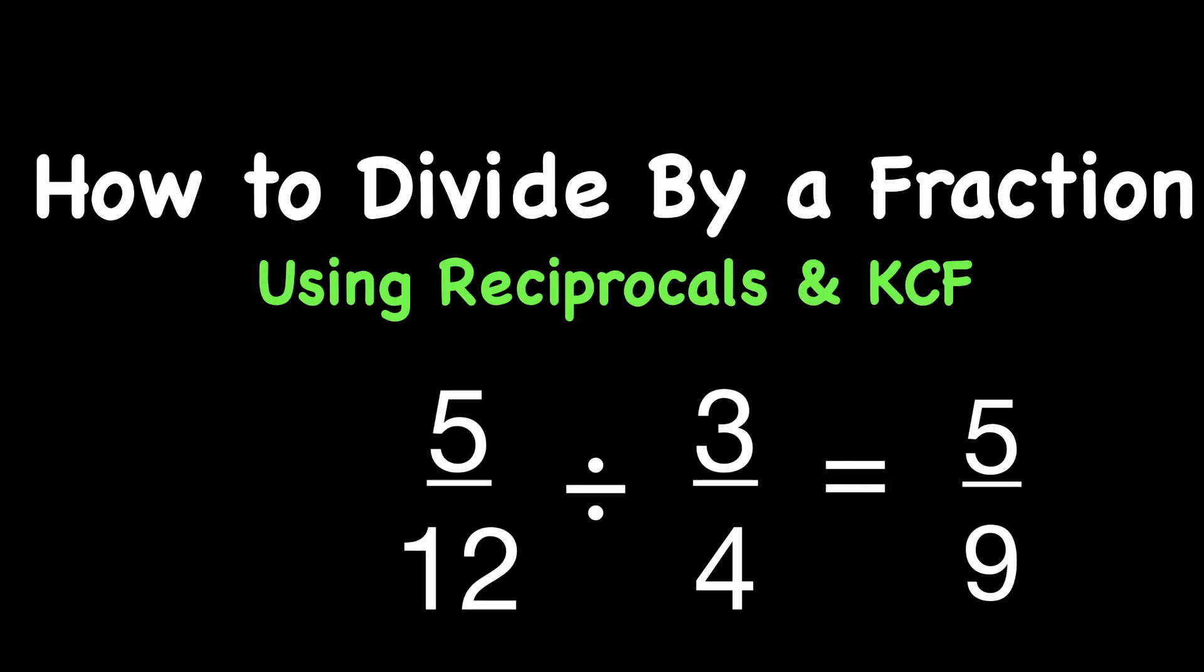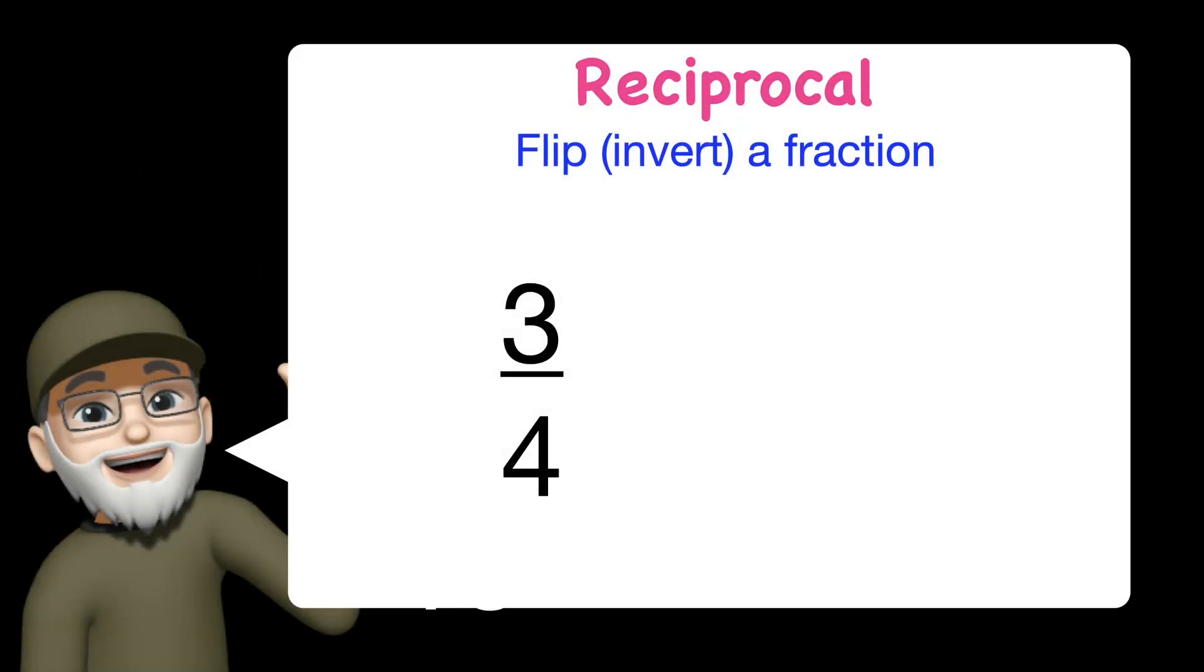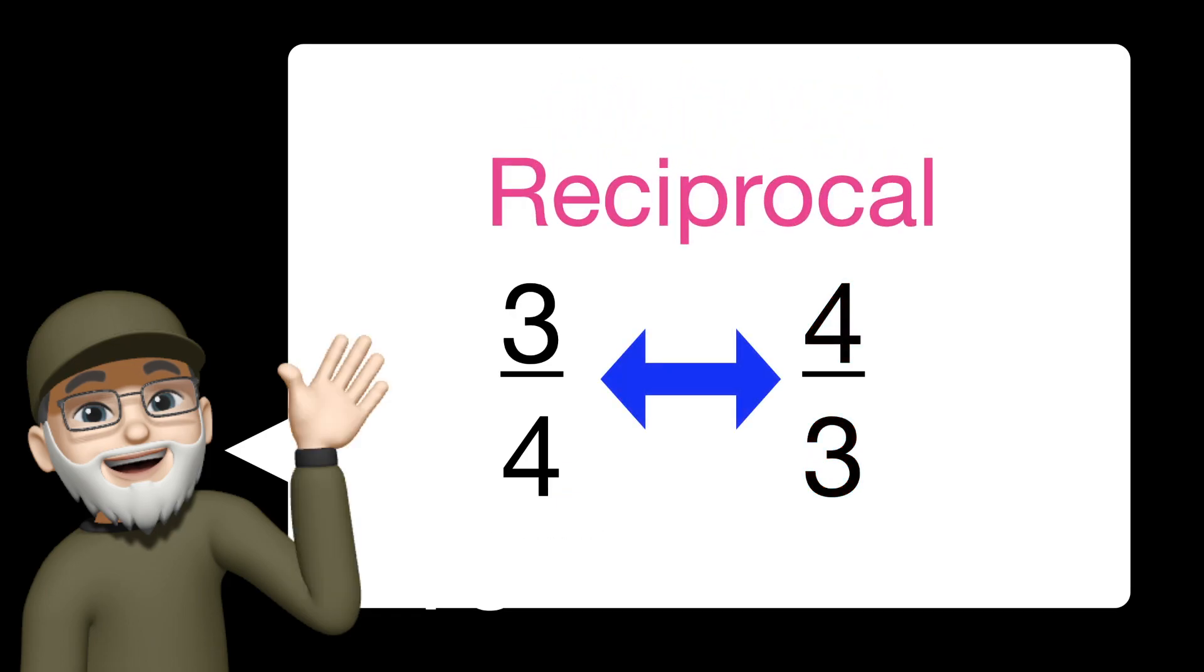We'll be using reciprocals. A reciprocal is when we take a fraction like 3 fourths and we flip it over. The numerator and denominator change places, and we can say that 3 fourths and 4 thirds are reciprocals of one another.